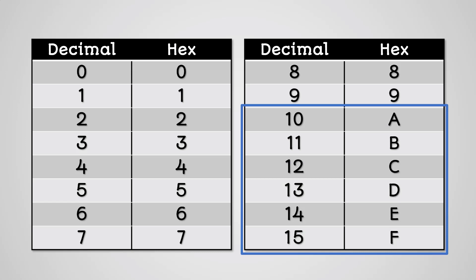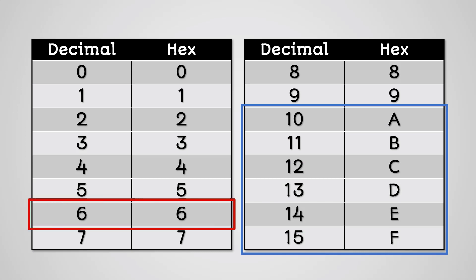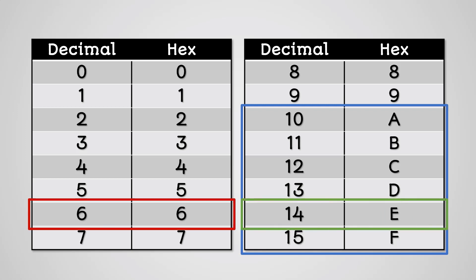So in hexadecimal the number 6 is 6, just like decimal, but the number 14 is E.